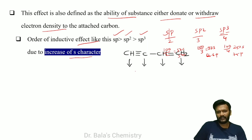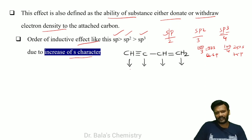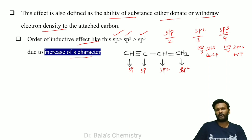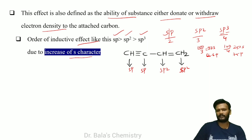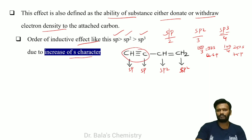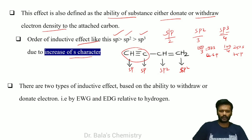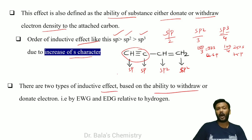For this molecule: a triple bond carbon is SP hybridized, a double bond carbon is SP2 hybridized, and a single bond carbon is SP3. SP has more electronegativity. There are 2 types of inductive effect based on ability to withdraw or donate electrons to the system.